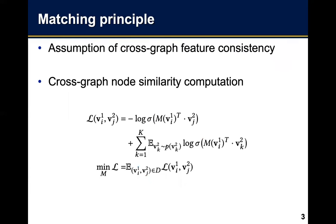Existing network alignment technologies often assume cross-graph feature consistency. If two nodes in two graphs have the same topological and attribute features, it is highly possible these two nodes are matching. Existing supervised network alignment technologies often aim to maximize the similarity between projected nodes in one graph and another node in another graph. Here M is a network alignment function, VI1 and VJ2 are two known matched nodes in two graphs, and the dot symbol represents the inner product between the node vectors.